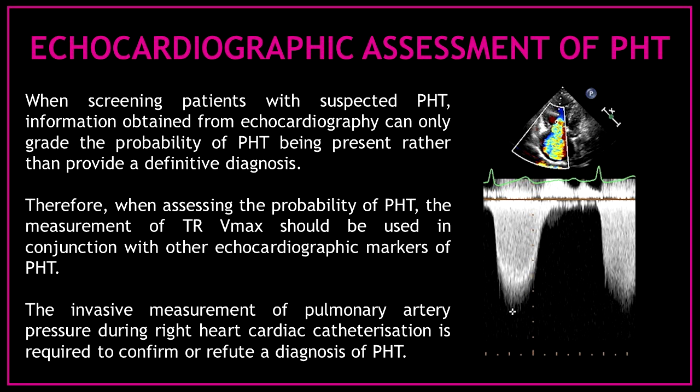When screening patients with suspected pulmonary hypertension, information obtained from echocardiography can only grade the probability of pulmonary hypertension being present rather than provide a definitive diagnosis. Therefore, when assessing the probability of pulmonary hypertension, the measurement of tricuspid regurgitation velocity should be used in conjunction with other echocardiographic markers. The invasive measurement of pulmonary artery pressure during right heart cardiac catheterization is required to confirm or refute a diagnosis of pulmonary hypertension.